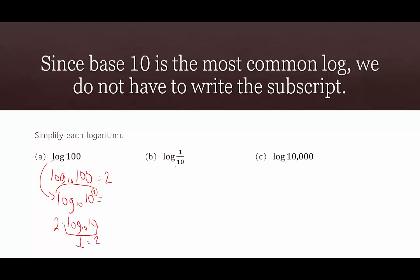Now log base 10 of 1/10. We can rewrite 1/10 as a power of 10 — that would be 10 to the negative 1. Once we have that exponent, we move it out in front: negative 1 times log base 10 of 10. Log base 10 of 10 is 1, and negative 1 times 1 is negative 1.